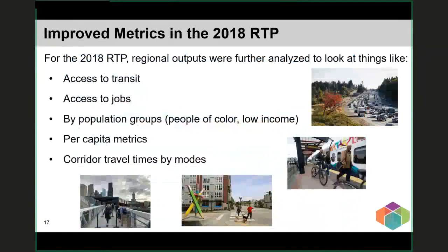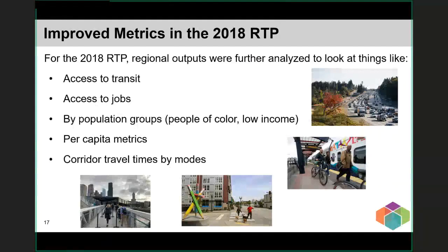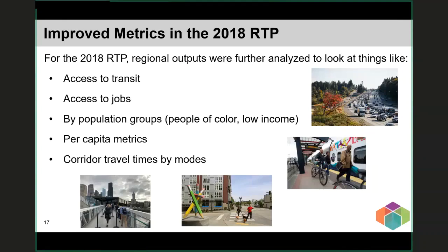For the 2018 RTP, PSRC worked to expand the types of metrics we report as well as the way they're visualized to better explain outcomes of the plan for people living and working in our region. Updated measures included access to frequent transit and jobs, with a focus on per-capita measures. PSRC also worked to ensure that all modes of travel were covered in our data summaries and attempted to look at equity across a wide variety of measures. We'll talk more about these performance measures and how we plan to add to them for this RTP update.